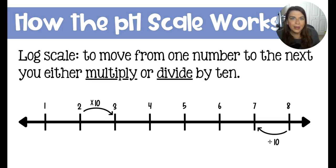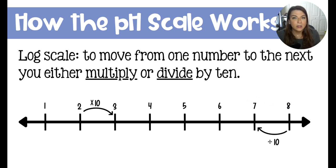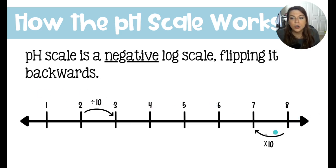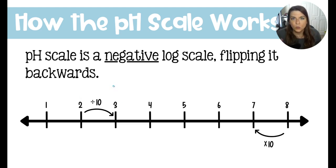When you got to algebra 2, you learned logs — log scales. Log scales: you move from 1 to 2, or from 8 to 7, by either multiplying or dividing by 10. Each jump on the scale represents something 10 times bigger or 10 times smaller than the number beside it. The pH scale is a negative log scale, so it just flips it backwards. To go up the scale, you actually divide, and to go down the scale, you multiply. So 2 is 10 times greater a value than 3, based on the way that logs work.